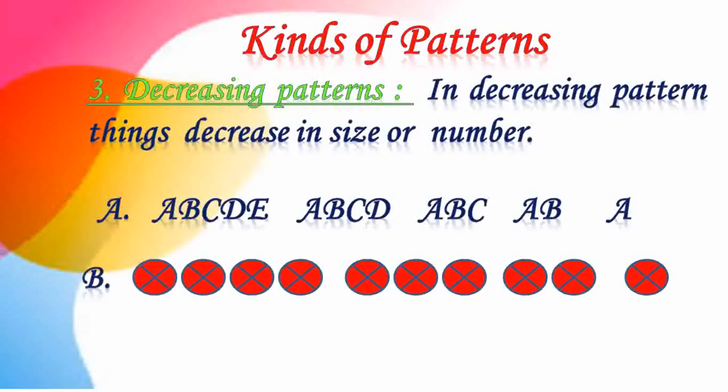In the second example, we follow the same thing. First there are four balls, then one ball decreases and it becomes three balls, then two balls, then one. So this is called a decreasing pattern — number or size decreased.